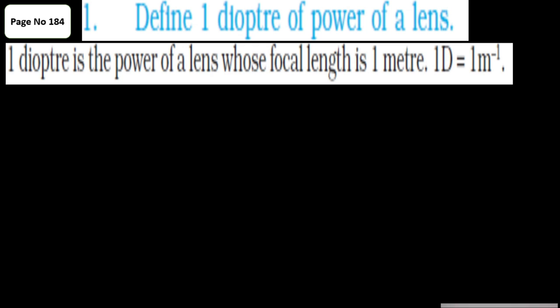Next: define one diopter of power of a lens. One diopter is the power of a lens whose focal length is one meter. Diopter is the SI unit of power, also written as m⁻¹. Power can be mathematically defined as the reciprocal of focal length expressed in meters, or it is the degree of divergence or convergence of that particular lens. Power for a convex lens is always positive and power for a concave lens is negative.